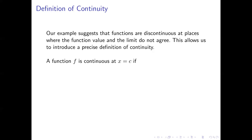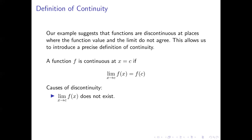Here is our precise definition of continuity. We'll say that a function f is continuous at a point where x equals c if this equation is true: the limit as x approaches c of f of x is equal to f of c. In other words, the limit as you approach a certain point on the function has to equal where you actually get when you arrive there. Given this definition, we can identify a few different causes of discontinuity: one is if the limit as x approaches c does not exist; the other is if the limit exists but doesn't equal f of c.